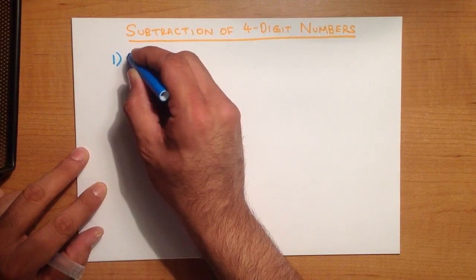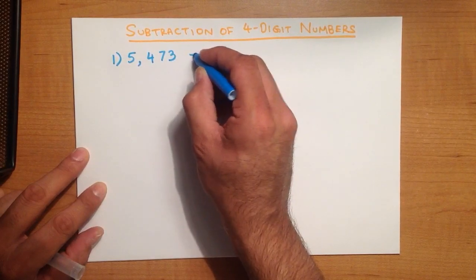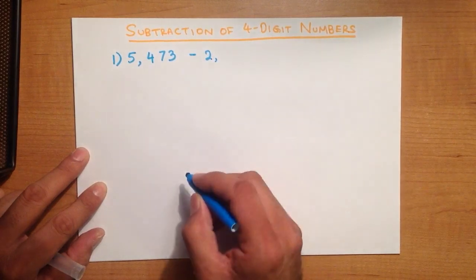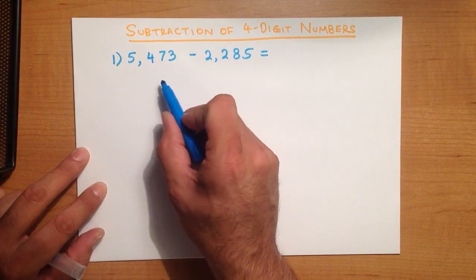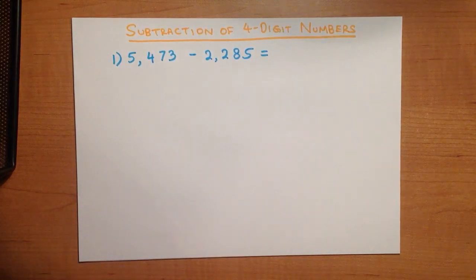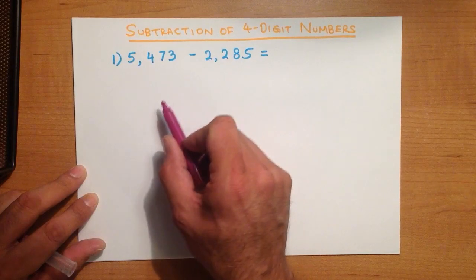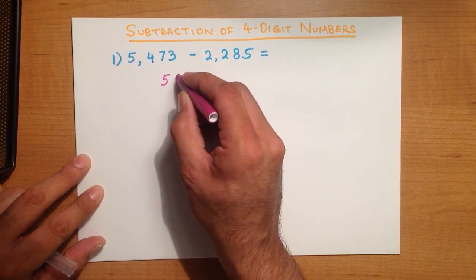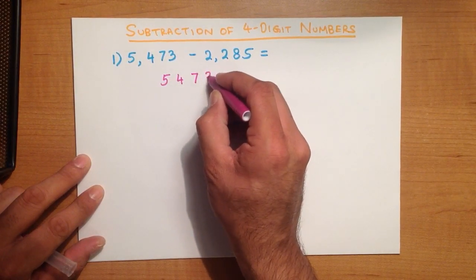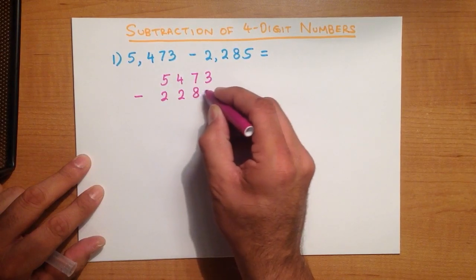What is 5,473 minus 2,285? With the vertical format, what we have to do is to write these numbers down in columns. So let's do that: 5,473 minus 2,285.